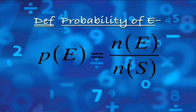The definition of the probability of an event: the probability of an event is defined to be the cardinality of list E divided by the cardinality of list S. That's the number of outcomes associated with the event E divided by the number of outcomes in your sample space.